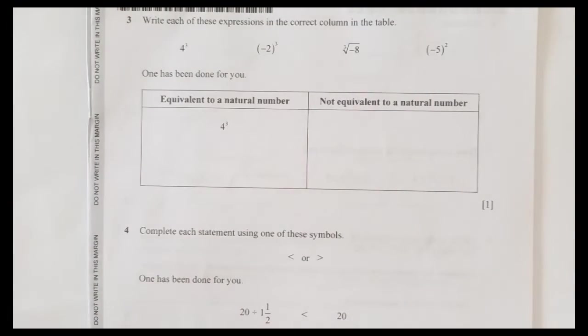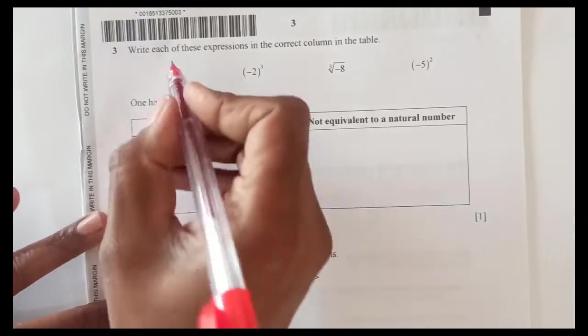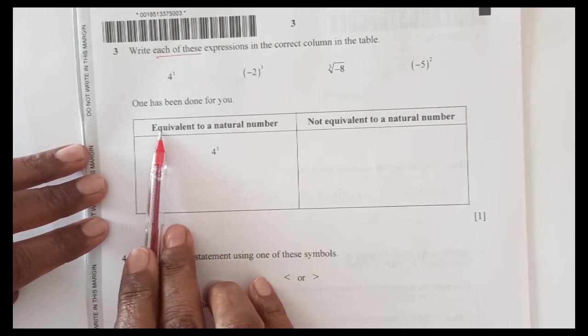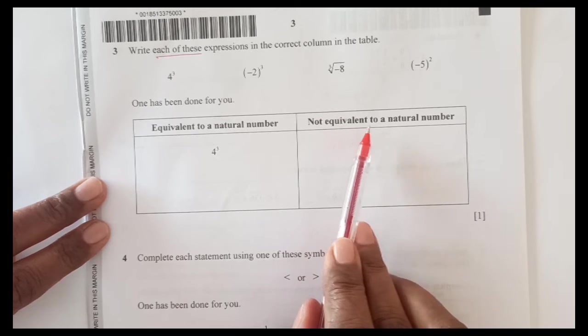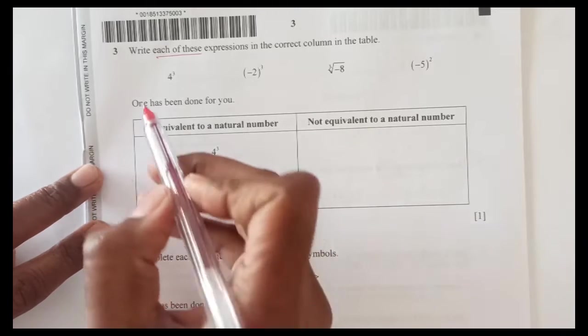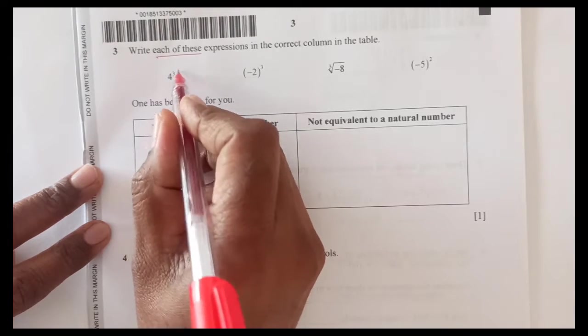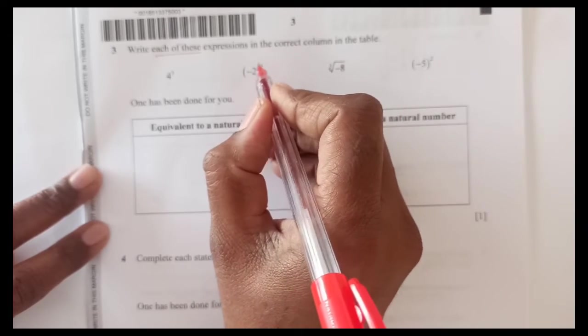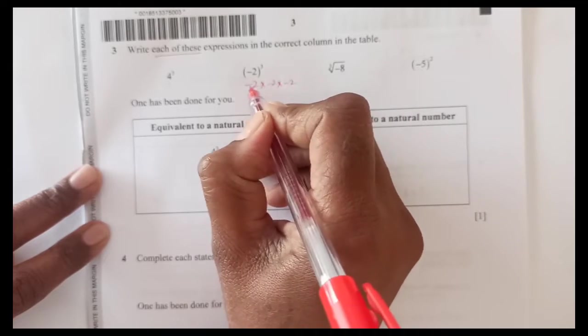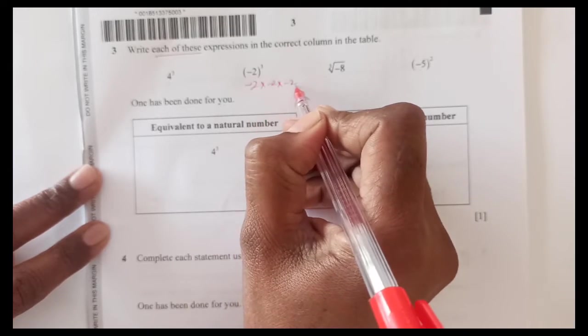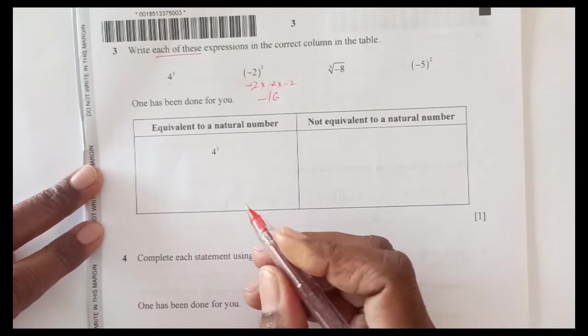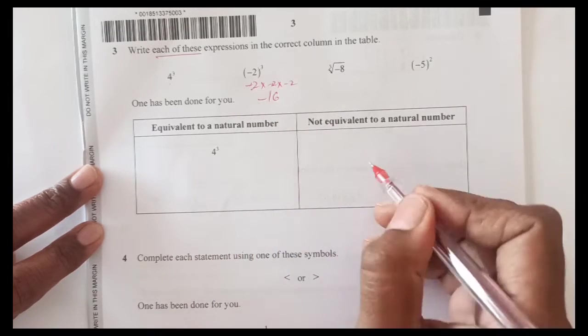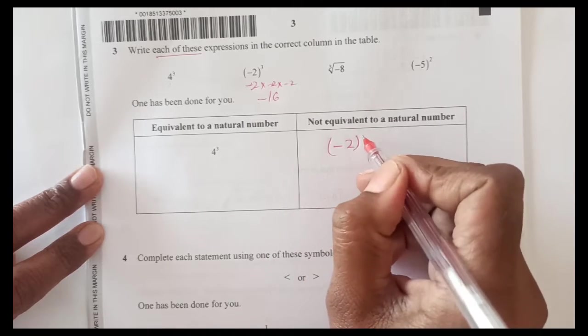Number 3: write each of these expressions in the correct column in the table. We have table here equivalent to a natural number and not equivalent to a natural number. This one is 4 to the power 3: 4 times 4 times 4 is 64. So this is natural number. This is negative 2 cubed: when you do this negative 2 times negative 2 times negative 2, this and this is positive 2 times 2 is 4, times 2 is 8, so negative 8. Negative 8 is not equal to natural number because natural numbers are all positive. So negative 8 will come here in this side.